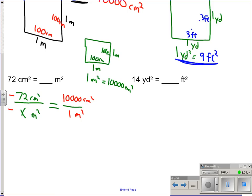72 times 1 equals x times 10,000. We're solving for x so divide by the 10,000.